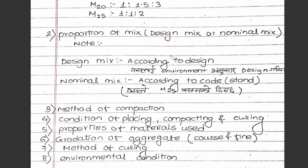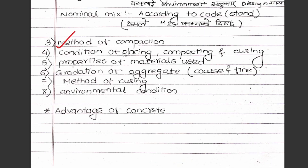Next is proportion of mix — we use design mix. From the type of mix, design mix is best in design. Other factors include condition of placing and curing. Properties of materials used — cement and aggregate, water — affect results, including gradation of aggregate, coarse-to-fine quantity ratio, method of curing, and environmental conditions.